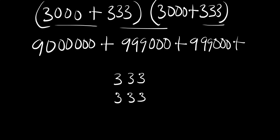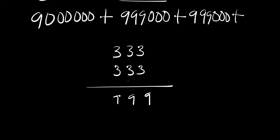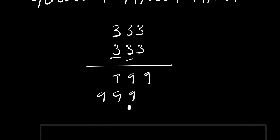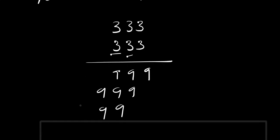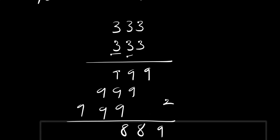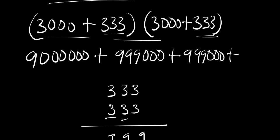Let's multiply 333 times 333 together. We have 3 times 3 that is 9, 3 times 3 is 9, 3 times 3 is 9, and continuing through, we add up: 9 plus 9 is 18, carry 1; that becomes 19, plus 9 is 28, carry 2; that gives 11, plus 9 is 20, carry 2; giving us 110,889.